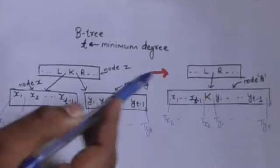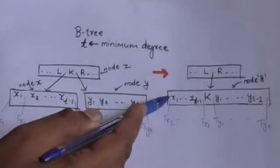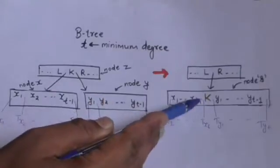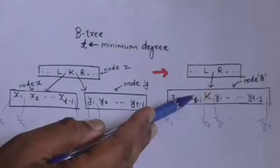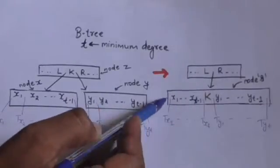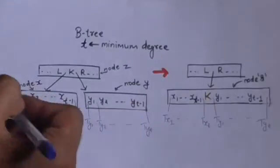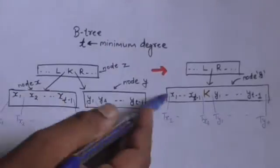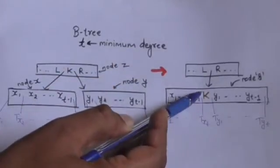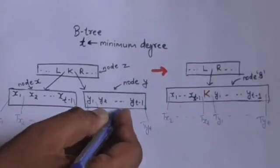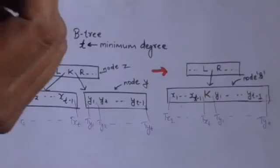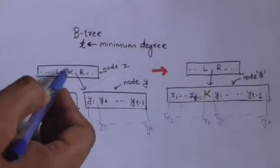When we merge nodes x and y into a single node s, key k will move from parent node z to the new child node s. In node s, key k will be at the mid position. At the left of key k there will be t minus 1 keys of node x and t children of node x, and at the right of key k there will be t minus 1 keys of node y and t children of node y.